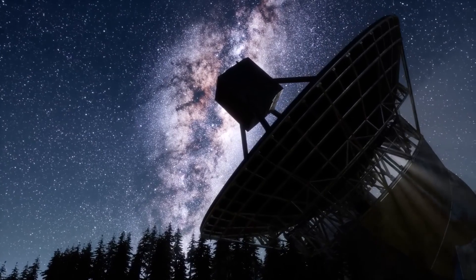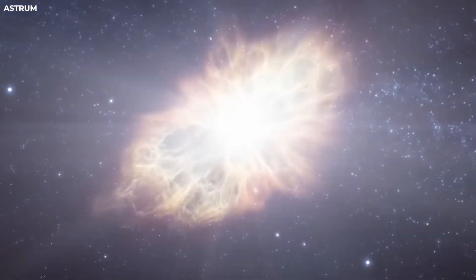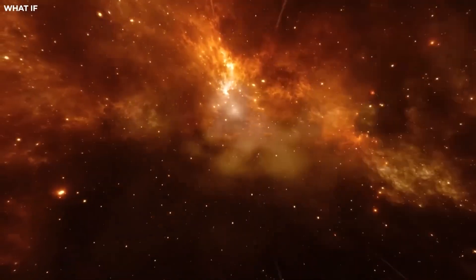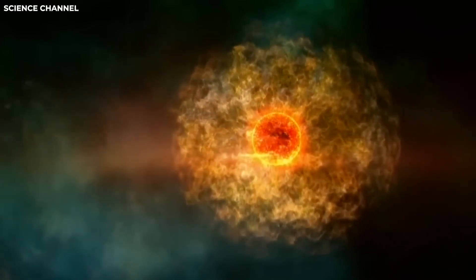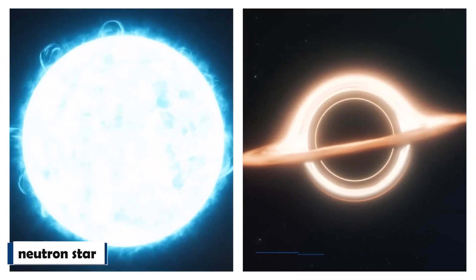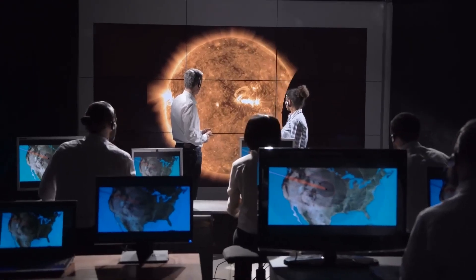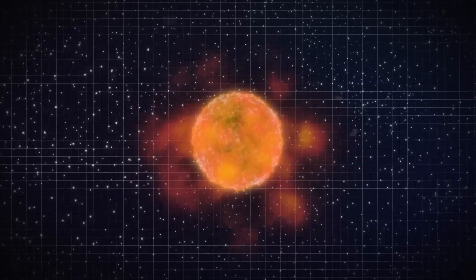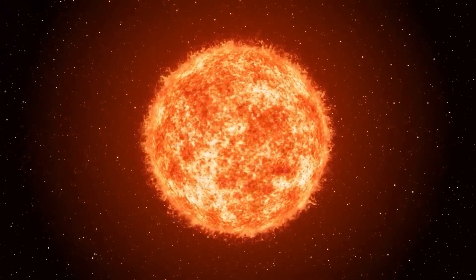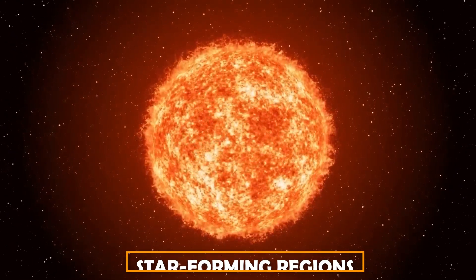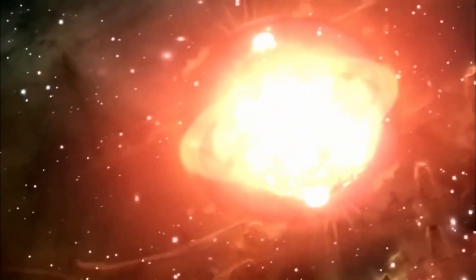However, the event may pose challenges for astronomical observations and satellites sensitive to those particular wavelengths. Once the explosion occurs, Betelgeuse's core will likely collapse, leading to the formation of either a neutron star or a black hole, depending on its mass. The powerful shockwave generated by the supernova can trigger the formation of new stars or disrupt nearby star-forming regions, leaving an indelible mark on the surrounding cosmic landscape.